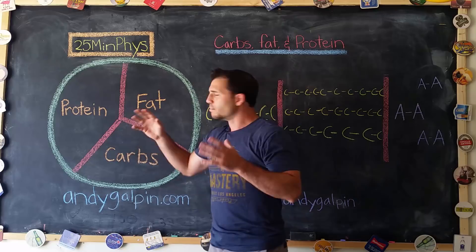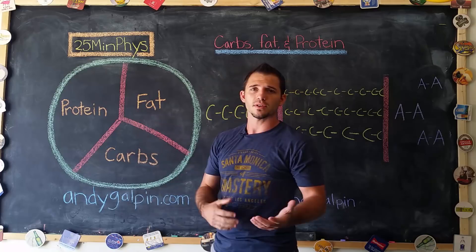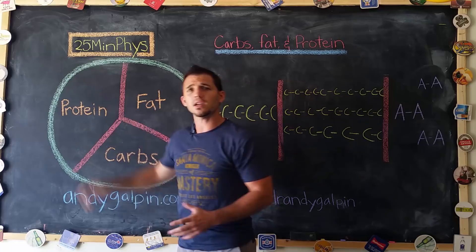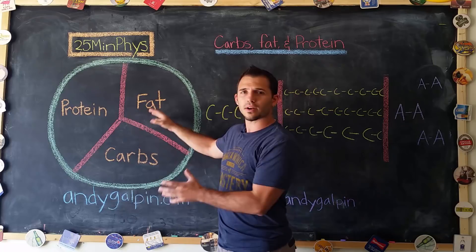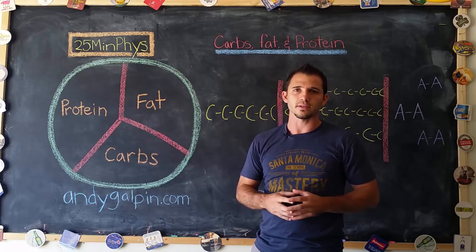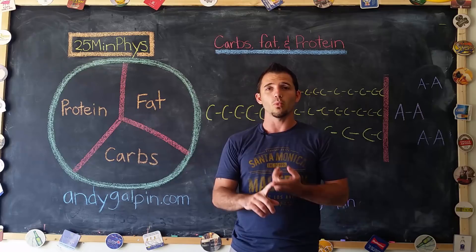Most people, unless they're on a specialized diet, are going to have some sort of a reasonable split between the amount of protein, fat, and carbohydrate they ingest throughout the day. Depending on your situation, you might change the proportions of some of these, and we'll get into those in later videos. But what's important to talk about today is, let's say you decided on some ratio — how do you actually go about integrating that into your diet?